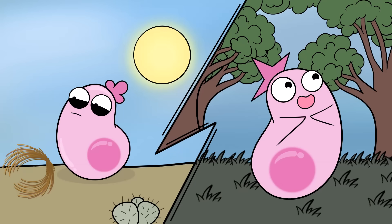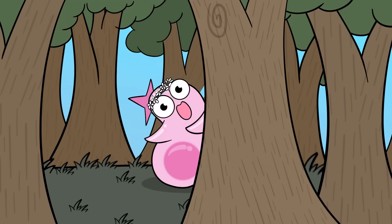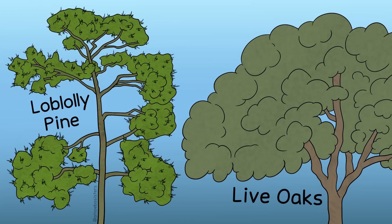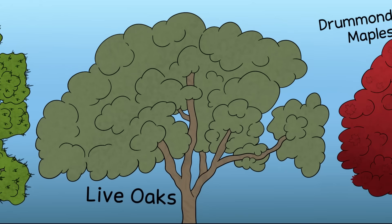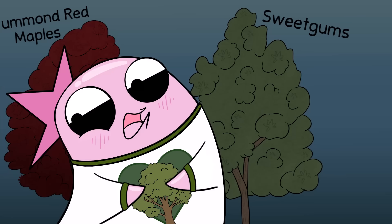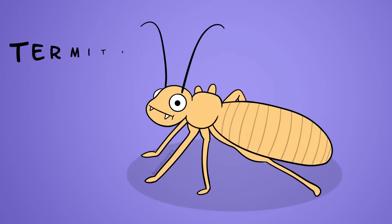I currently live in a place that is really different from where I grew up. Where I live now, we got a lot of trees — tons of glorious trees, from loblolly pines and live oaks to drummond red maples and sweet gums. Trees everywhere. I like trees. And we also have a type of insect that I never saw where I grew up: termites.